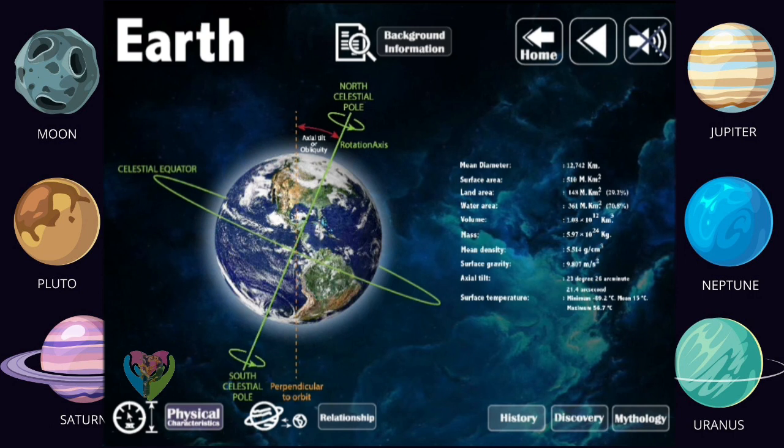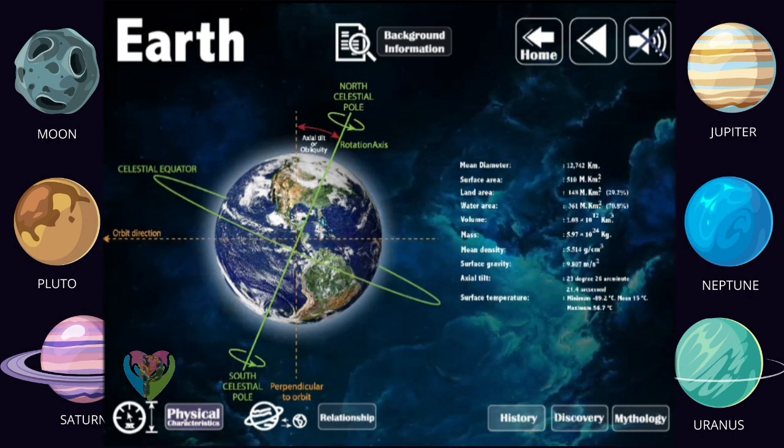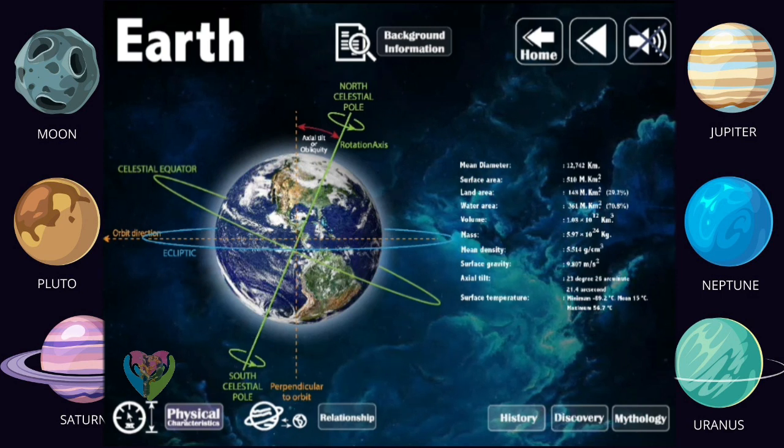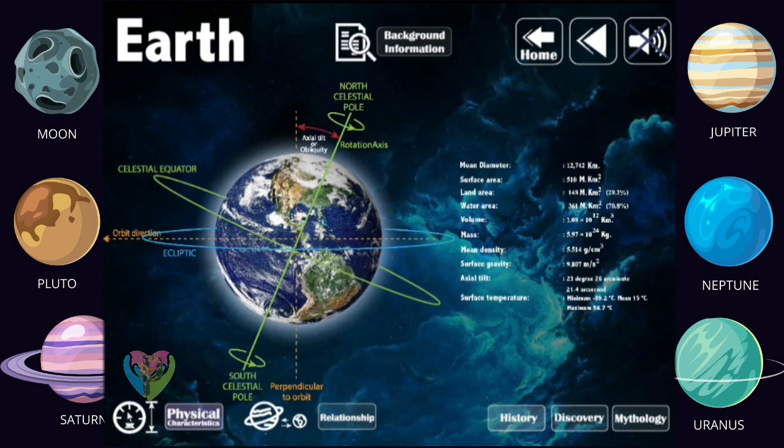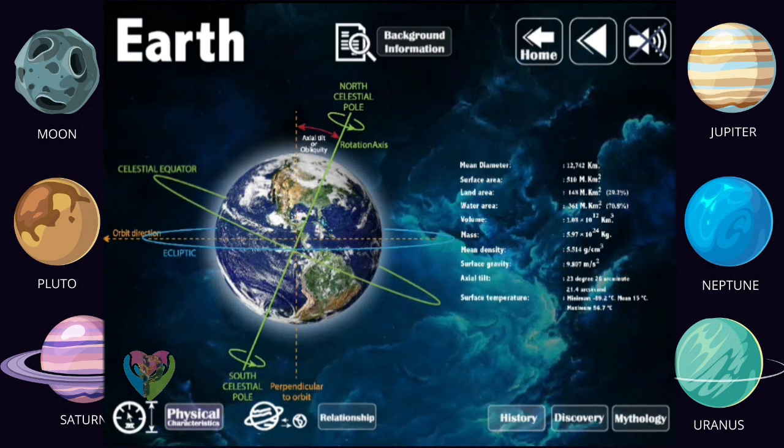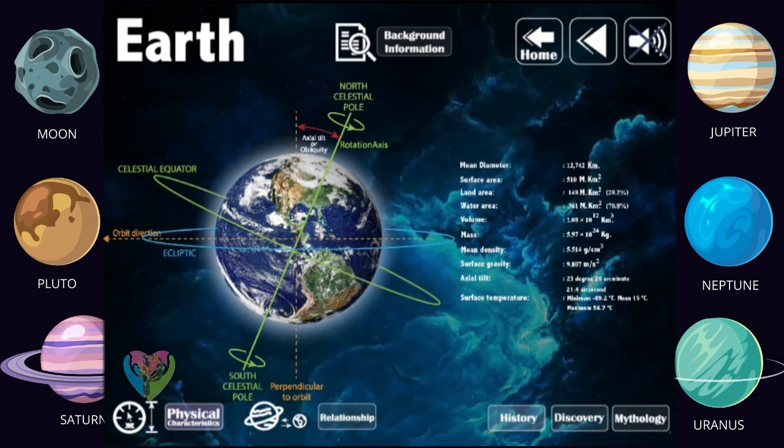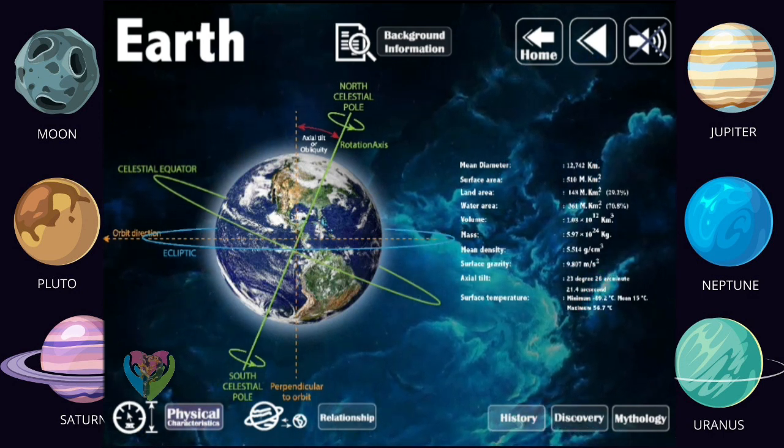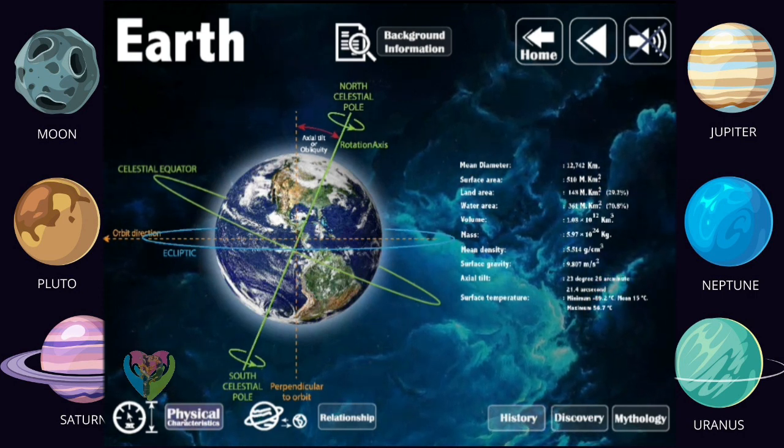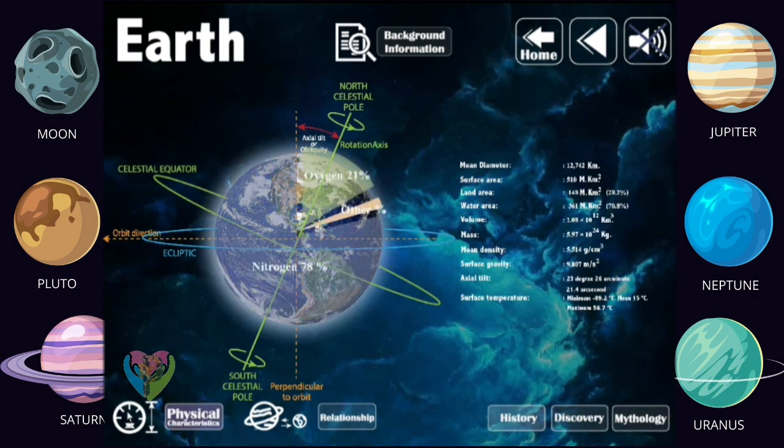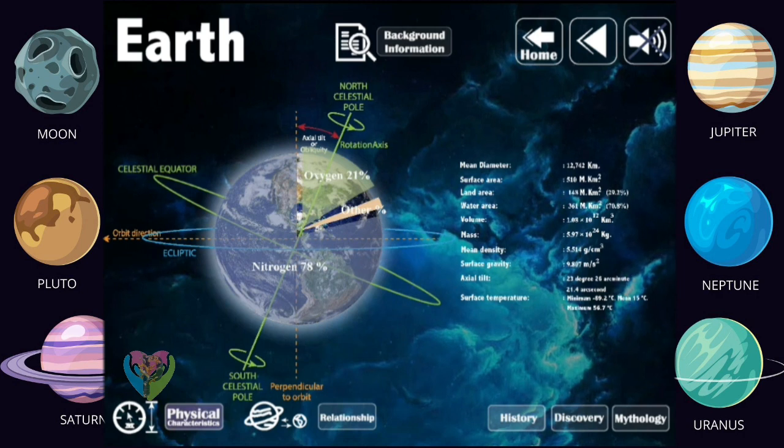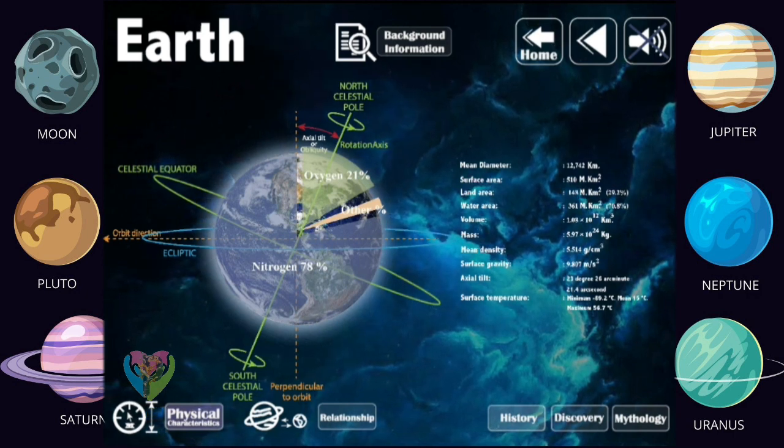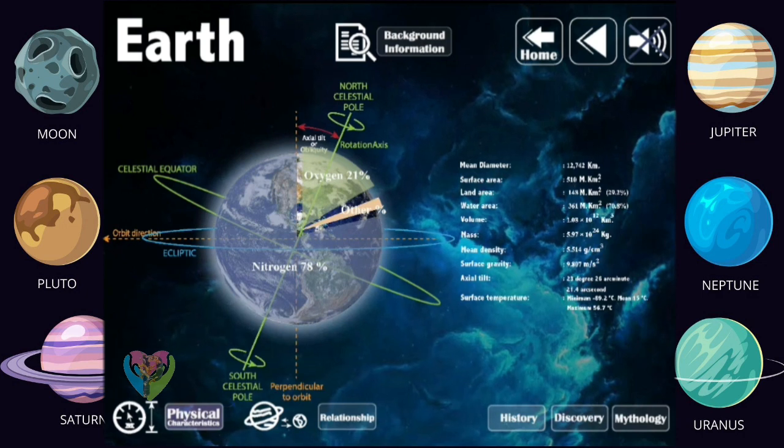Mass 5.7219 times 10 to the 24 kilograms. Mean Density 5.514 grams per cubic centimeter. Surface Gravity 9.807 meters per square second. Axial Tilt 23.5 degrees 26 arc minutes 21.4119 arc seconds. Surface temperature Minimum negative 89.2 degrees Celsius, Mean 15 degrees Celsius, Maximum 56.7 degrees Celsius. Composition: Nitrogen 78.08%, Oxygen 20.95%, Argon 0.93%, Carbon Dioxide 0.039%, Neon 0.002%.